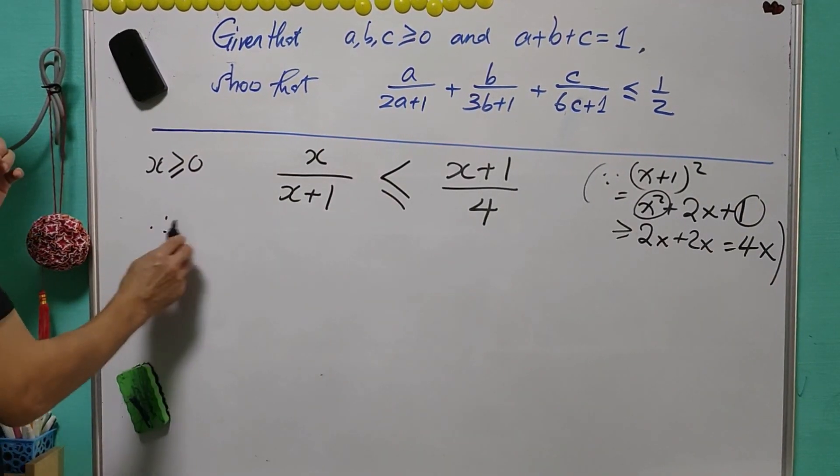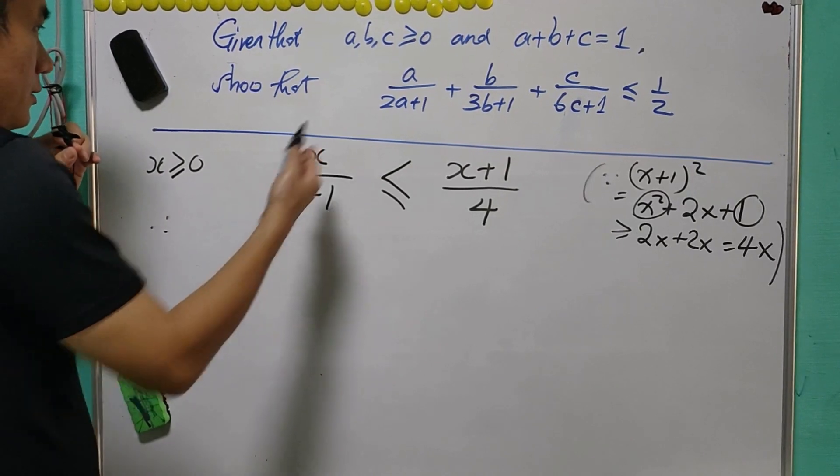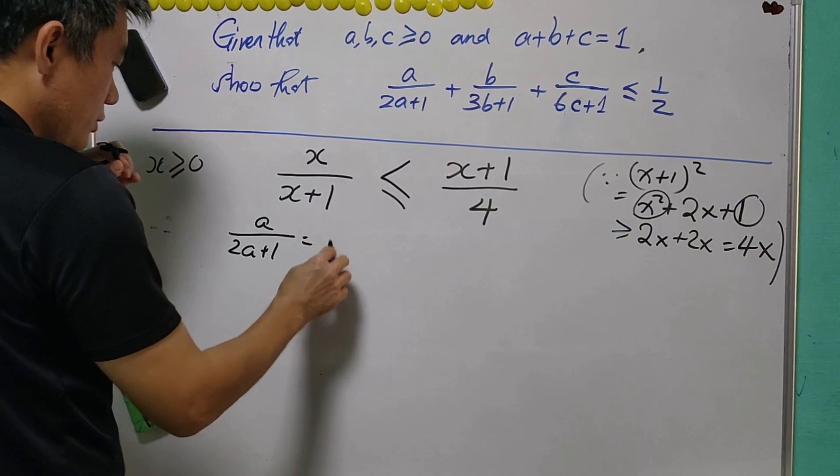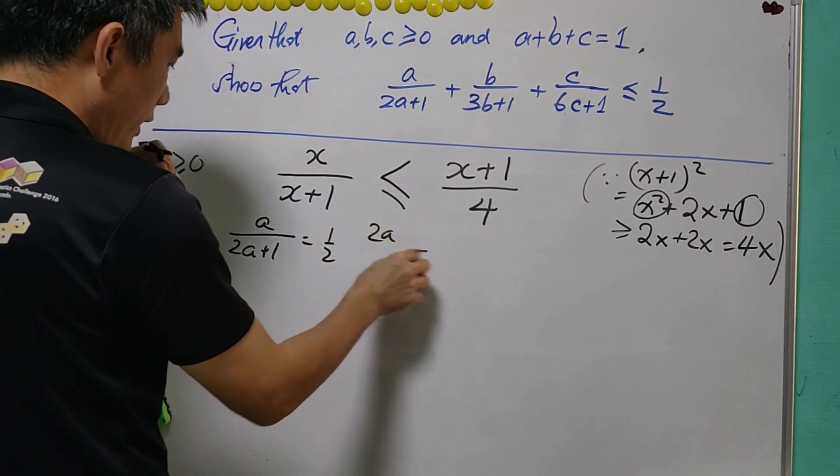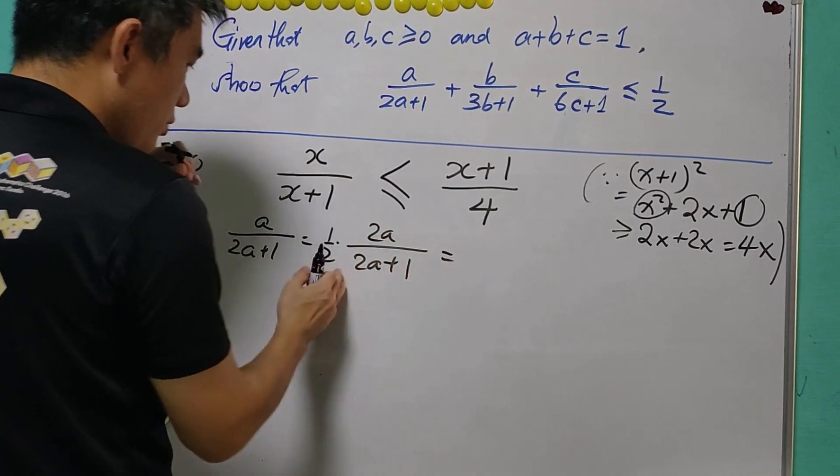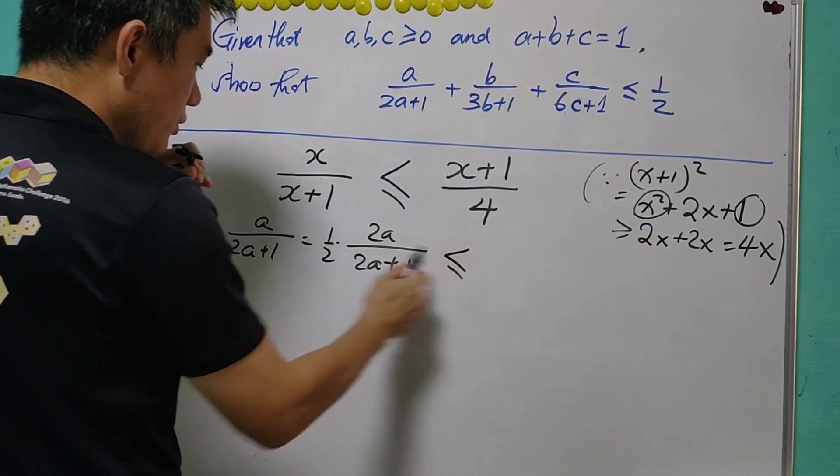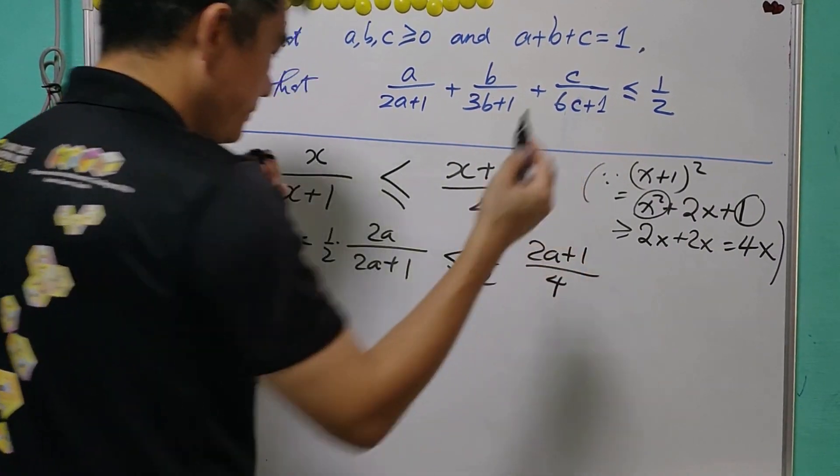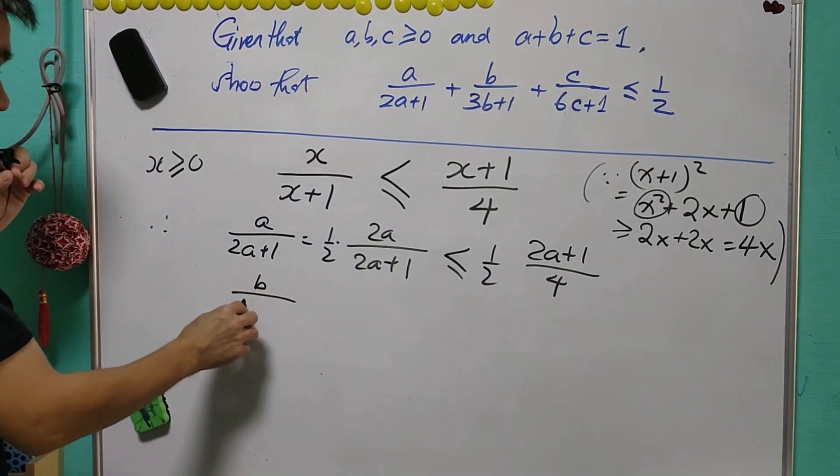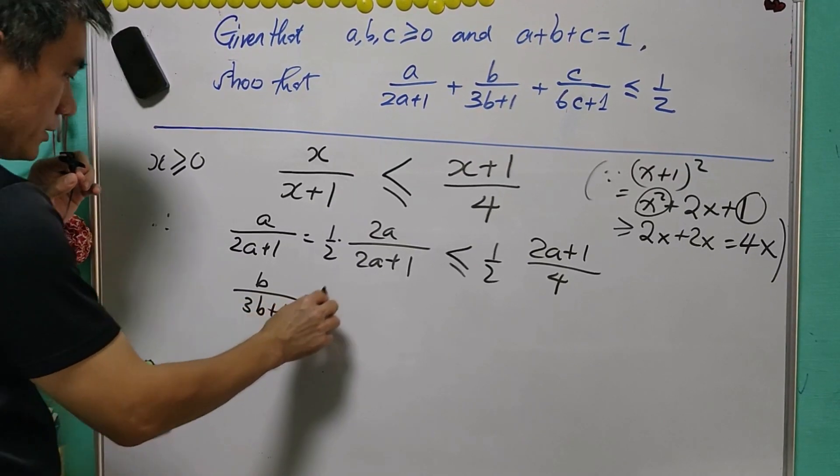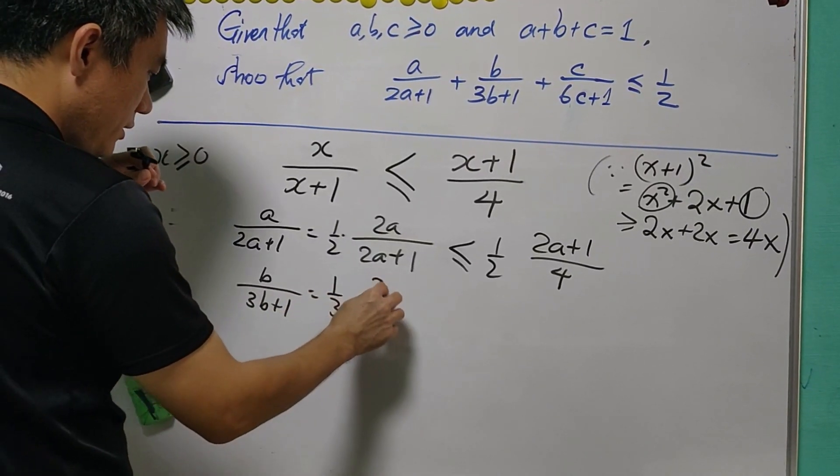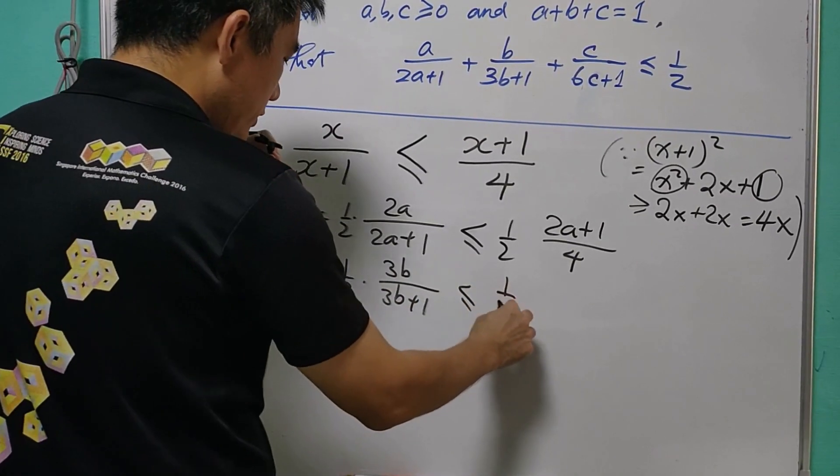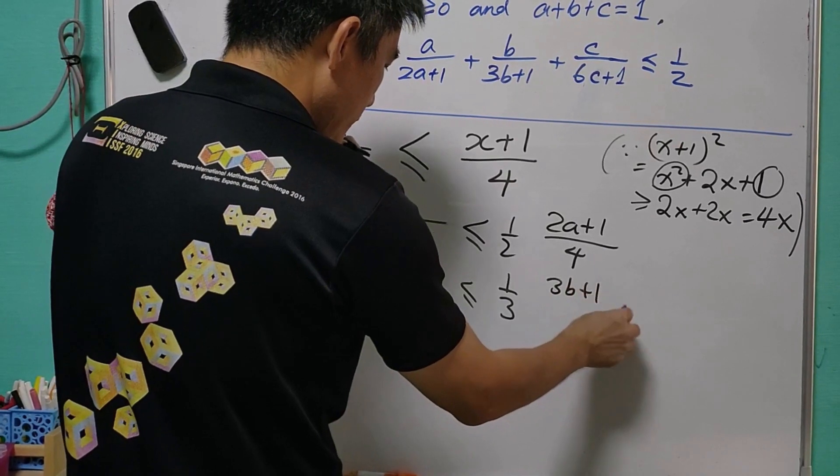And because of this, now it is easy to get the answer because A over 2A plus 1 is equal to half 2A over 2A plus 1, and this will be less than or equal to half 2A plus 1 over 4. And for B over 3B plus 1 is equal to 1 over 3, 3B over 3B plus 1, less or equal to 1 over 3, then 3B plus 1 over 4.